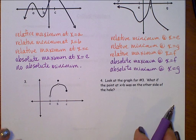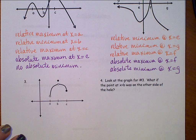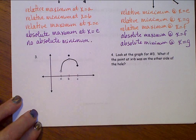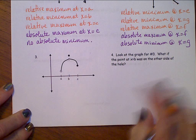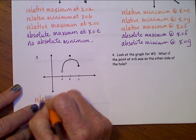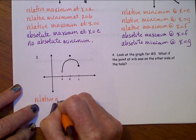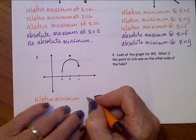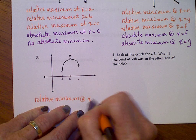Looking at this one down here, when we start identifying our relative extreme values, we only see a relative minimum at x equals c.